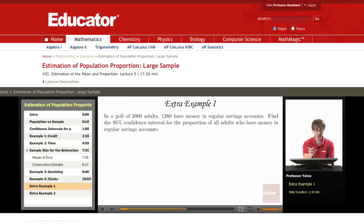Our first example that we're going to look at: in a poll of 2,000 adults, 1,280 have money in regular savings account. Find the 95% confidence interval for the proportion of all adults who have money in regular savings accounts.